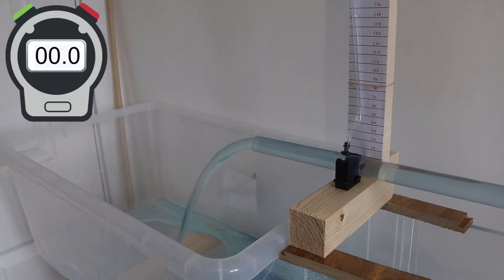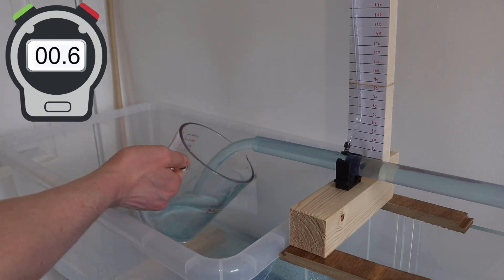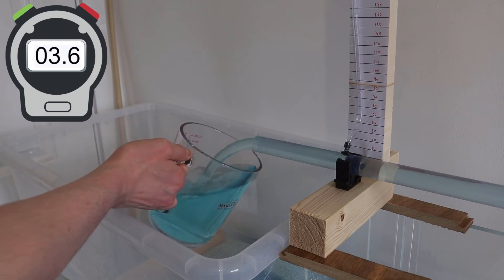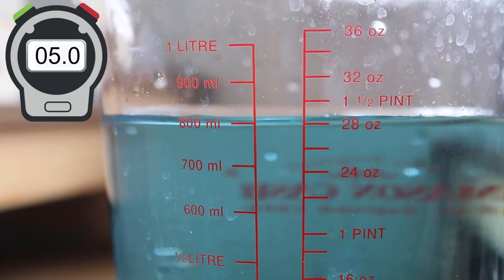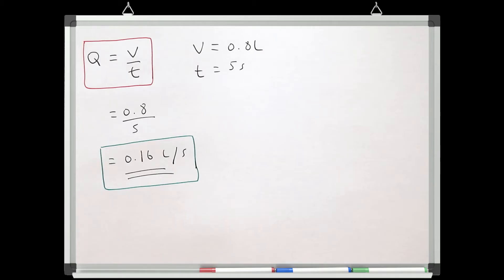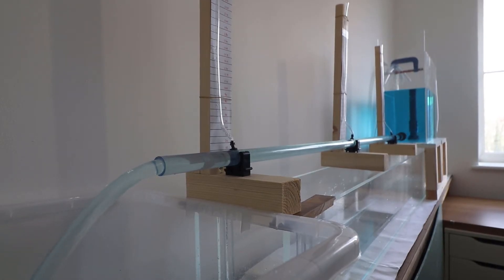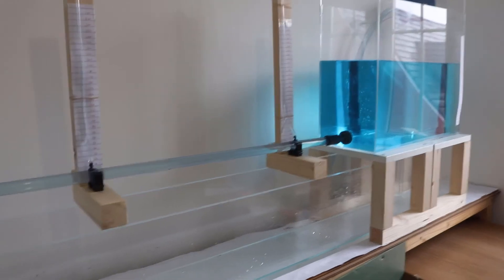Let's repeat the measurement of discharge and see what we now have. With the longer pipe installed, I collected 0.8 liters in 5 seconds, which gives a discharge of 0.16 liters per second. Just by increasing the length of the pipe by about 1 meter, our discharge has dropped by about 30%. We can now really start to see the effects of the losses we're experiencing along the length of this pipe.